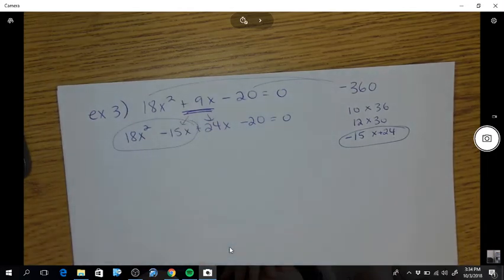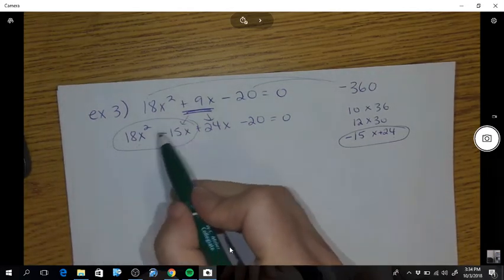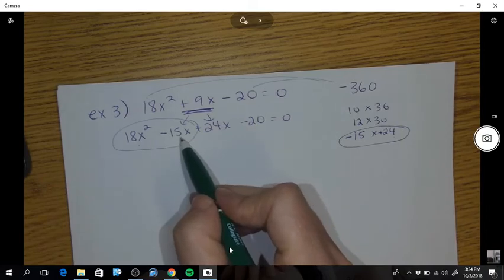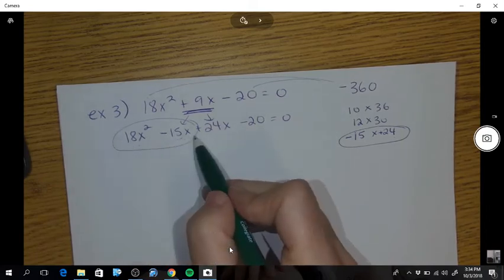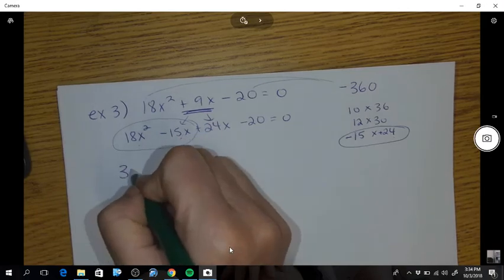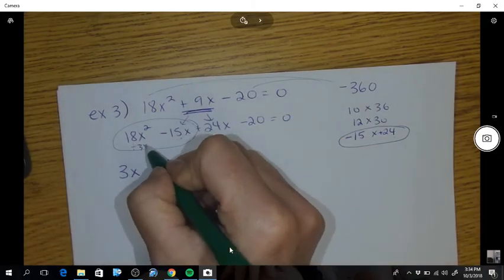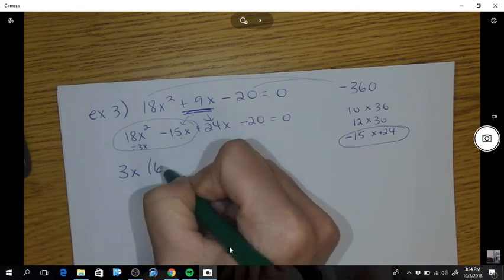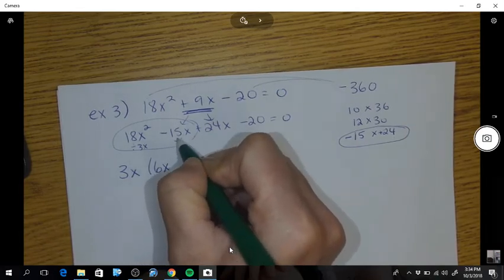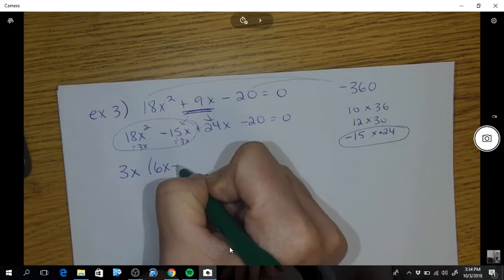So in this one, you group the two and you take out what is common between these two. So the largest number I can divide them by is 3 and I can divide both by an x.